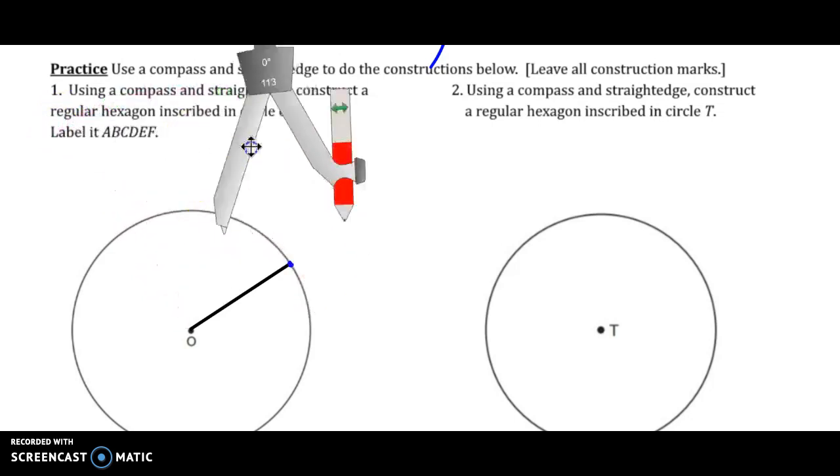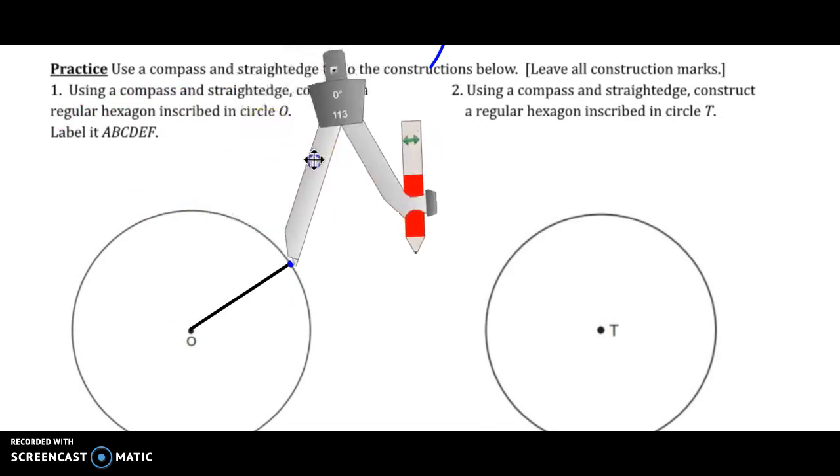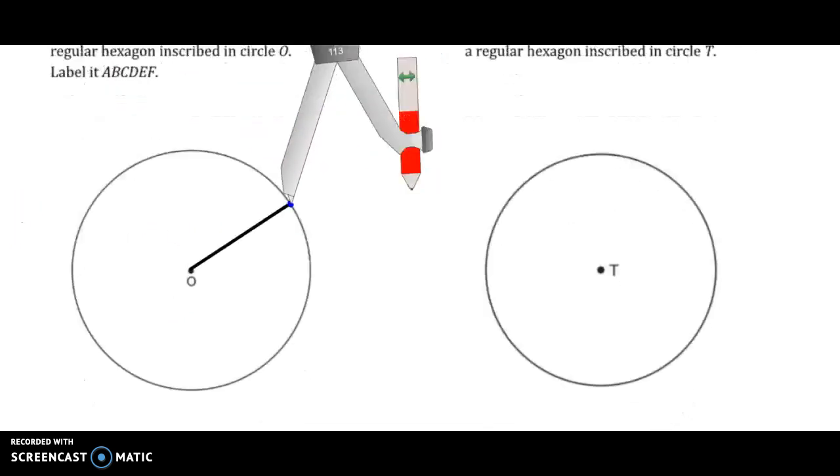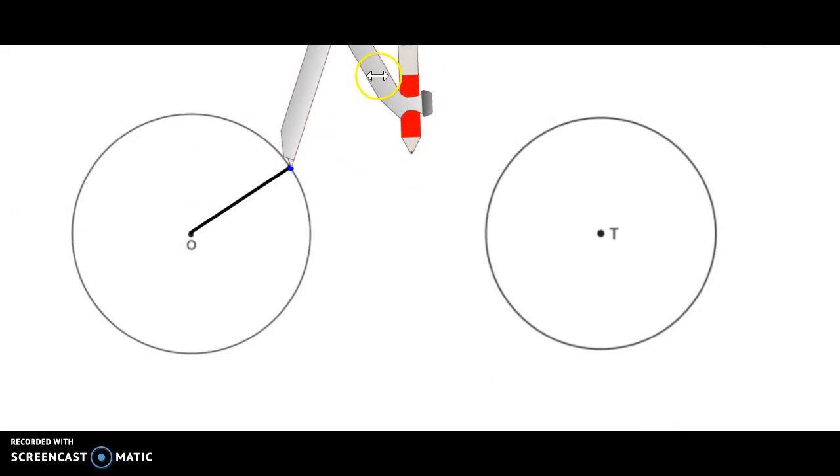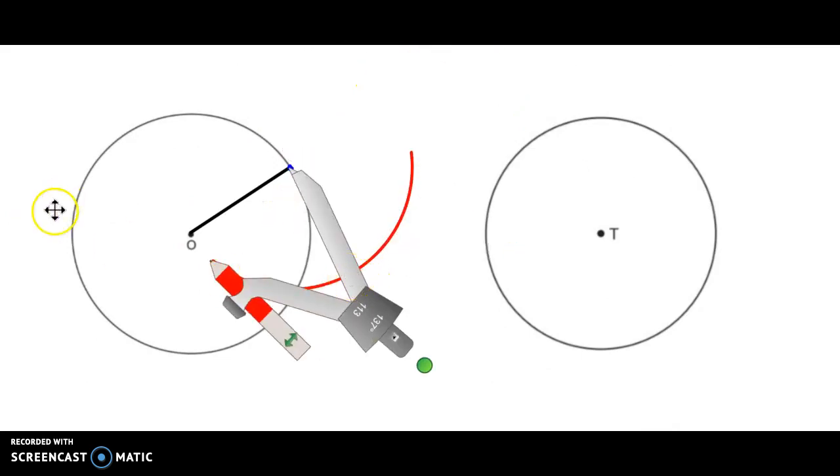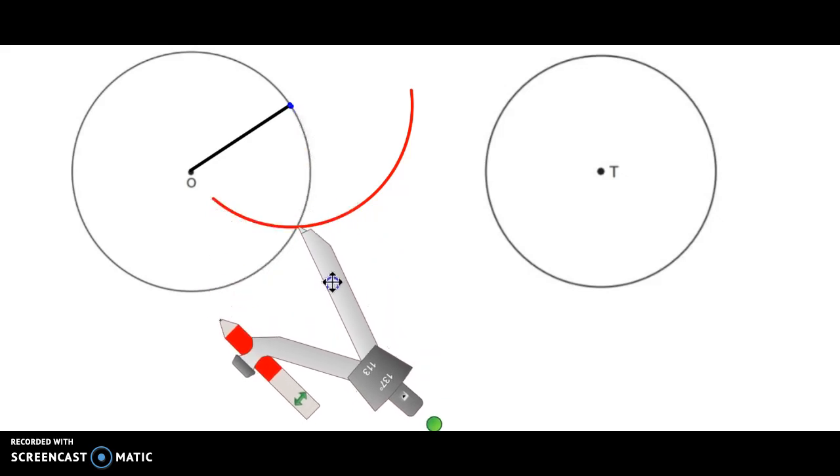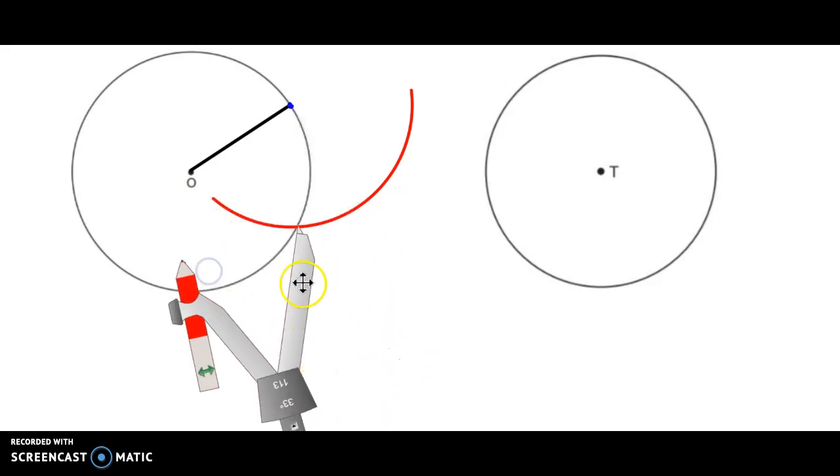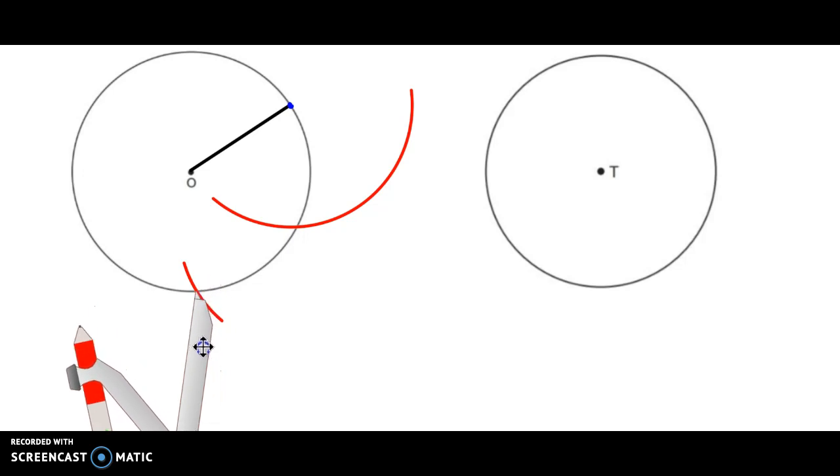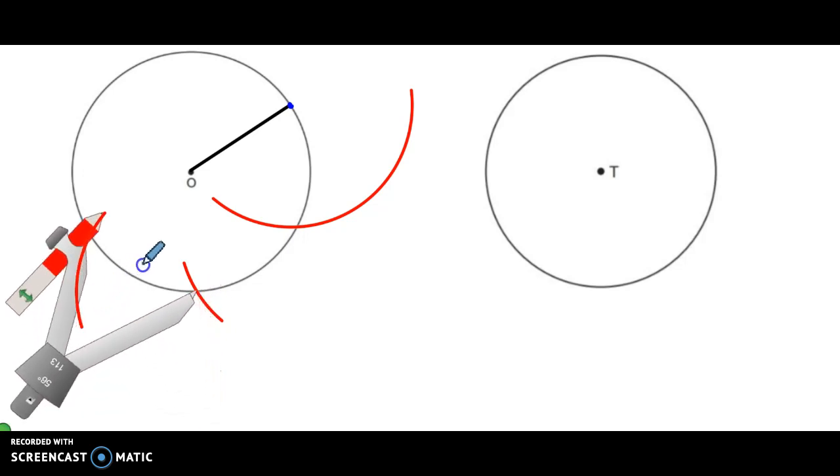So I take my compass and I measure that radius of that circle. And now I'm going to transfer my compass. You can do it anywhere on the circle. I like to just start where I already have a point. And we're going to make an arc. Transfer your compass to where that arc intersects the circle. Make another arc.